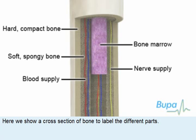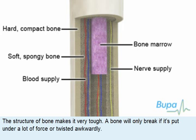Here we show a cross-section of bone to label the different parts. The structure of bone makes it very tough. A bone will only break if it's put under a lot of force or twisted awkwardly.